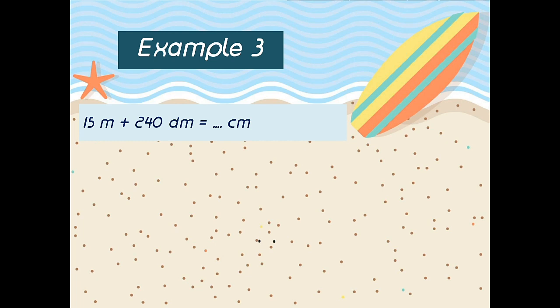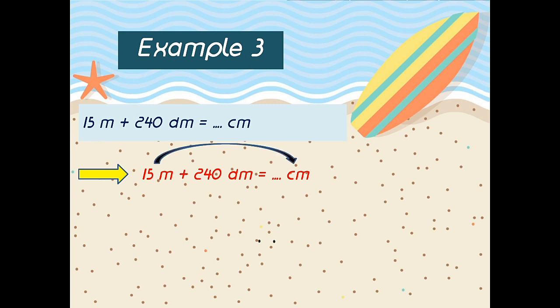15 meter plus 240 desimeter is how many centimeter? The answer. First, from meter to centimeter — up or down? Good, down. How many steps? Yeah, two. So the answer: 15 meter times 10 times 10 is 1500 centimeter. Next, from desimeter to centimeter — up or down?